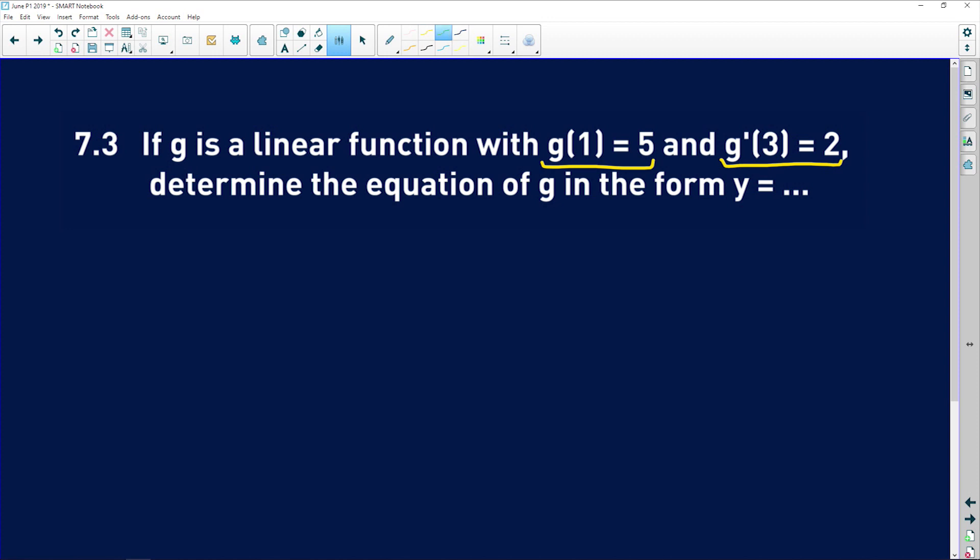So what do these two pieces of information mean? Well, this one is basically saying that where x equals 1, y equals 5. So that's one point that we have on the graph of g.